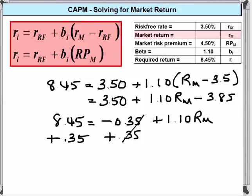To eliminate that, we're going to end up with 8.80 is equal to 1.10 times the return on the market, and return on the market is equal to 8.